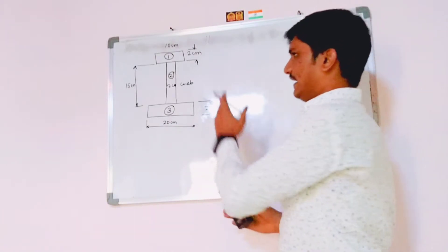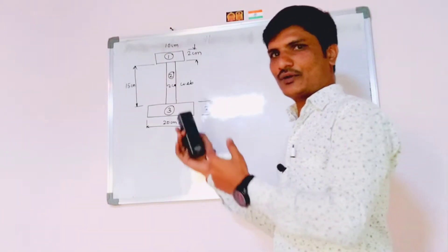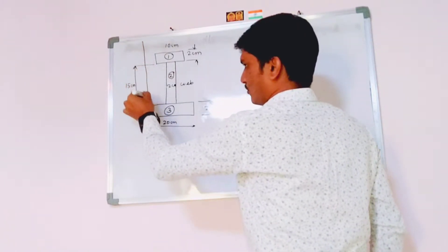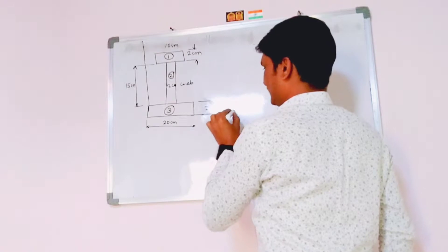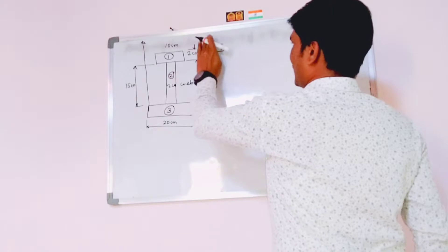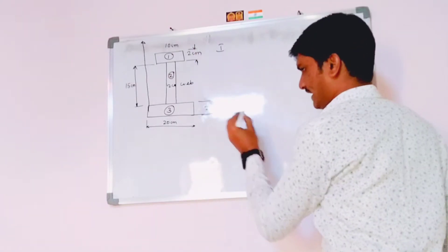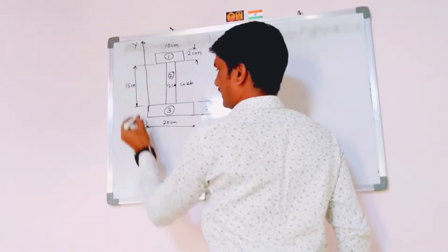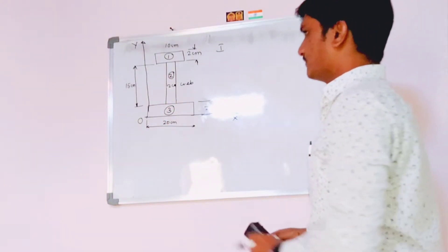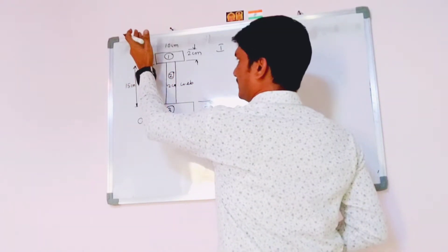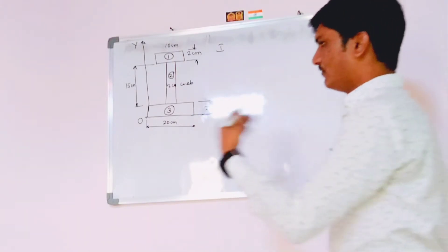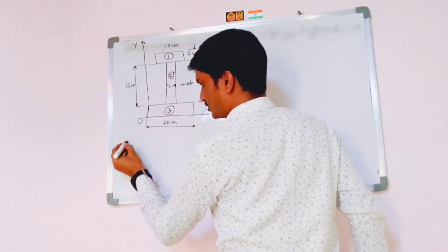The entire lamina is located in the first quadrant. We fix the origin O with x and y reference axes. From the reference lines, we will calculate the x-distance and y-distance for each section. Before that, we need to calculate the area for all three sections.